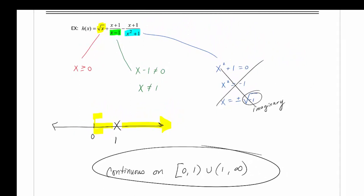Most functions that we deal with—polynomials, rationals, radical, and trigonometric functions—they are all continuous on their domain.